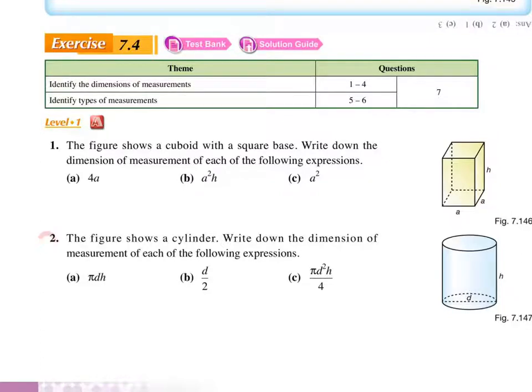First, when we talk about like number two, we need to write down the dimension. So we need to look at the variables. This is part a, so there are only d and h being variable. Part b, only d is variable, and then part c, d squared is degree 2, and then h is degree 1. So the answer will look like this. Let's see whether you can understand that.